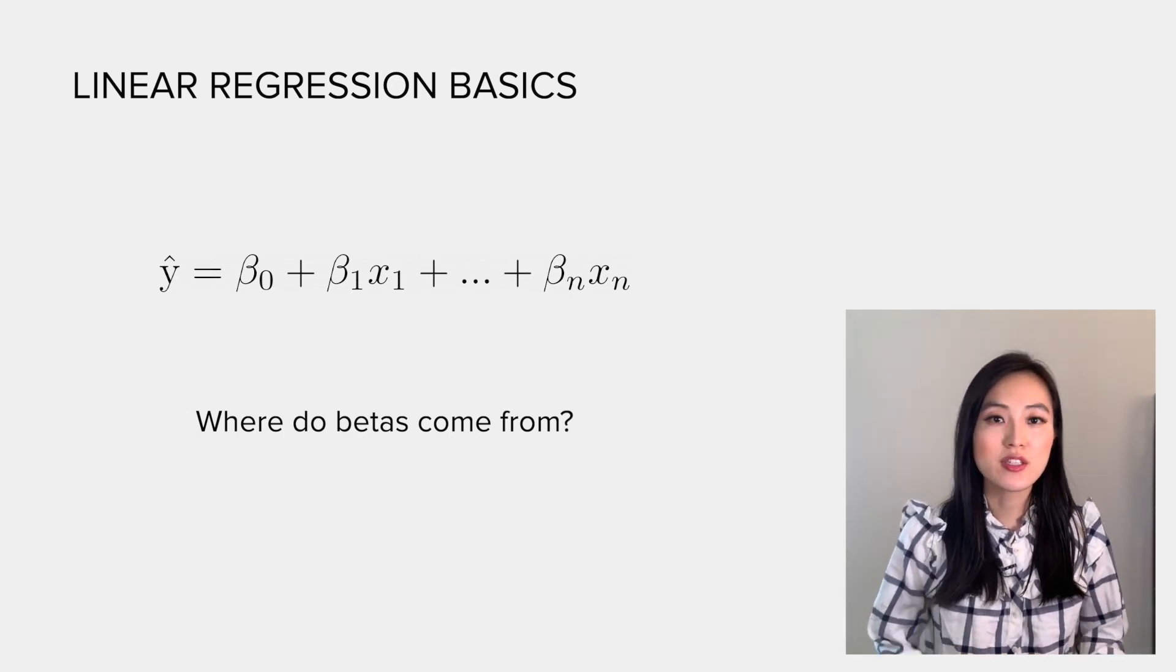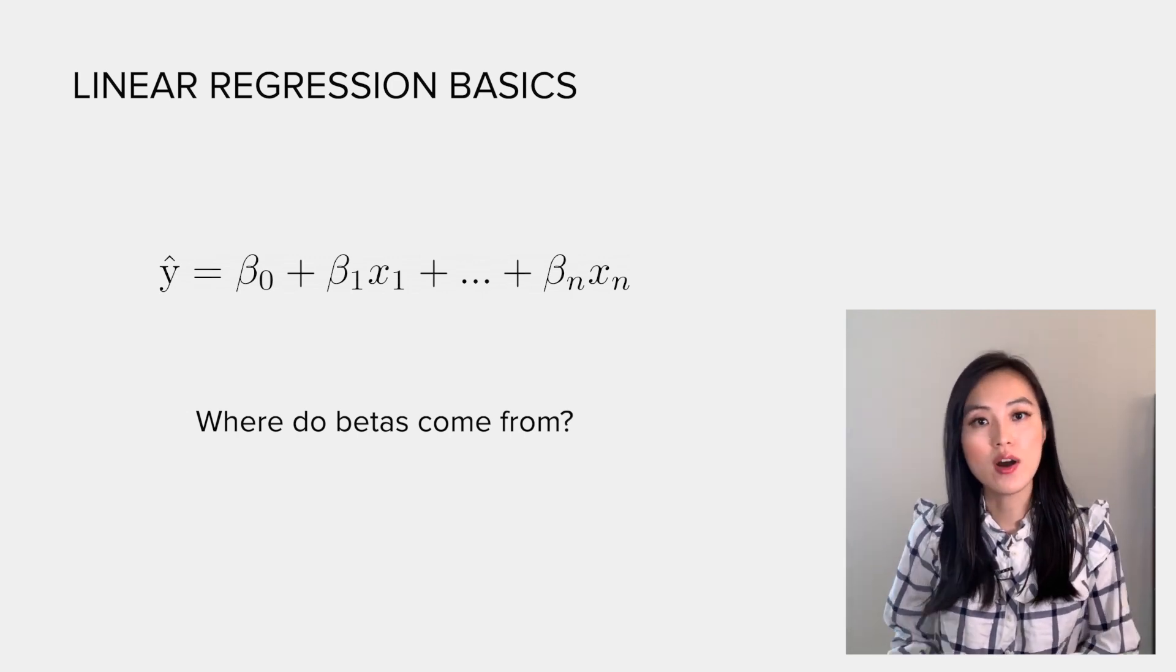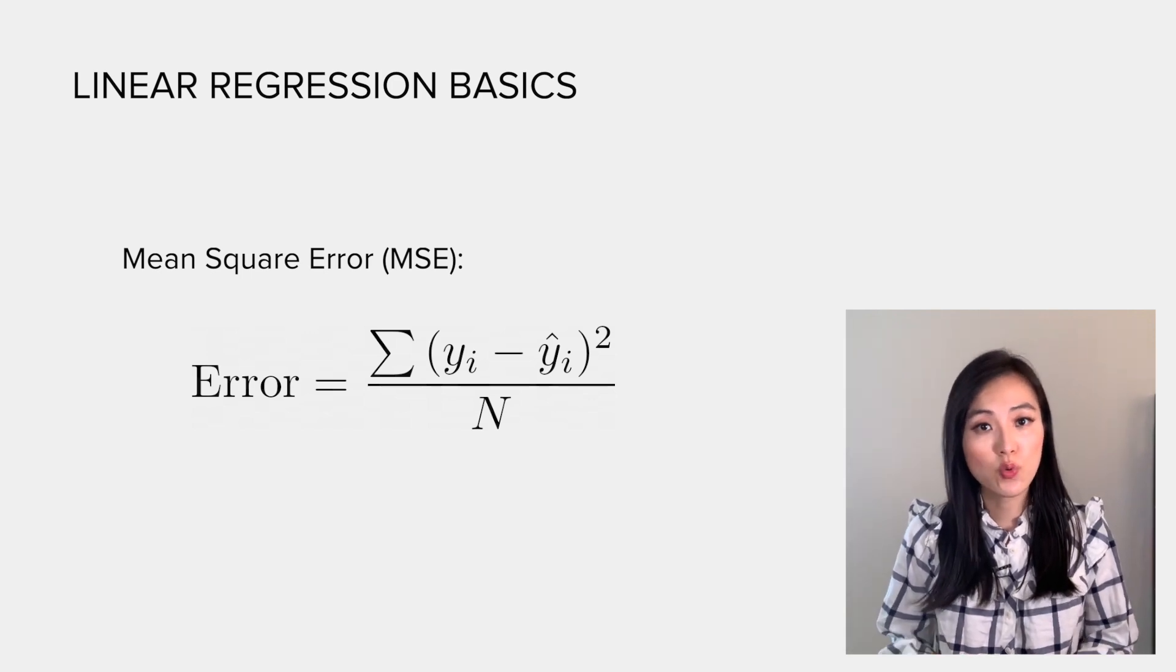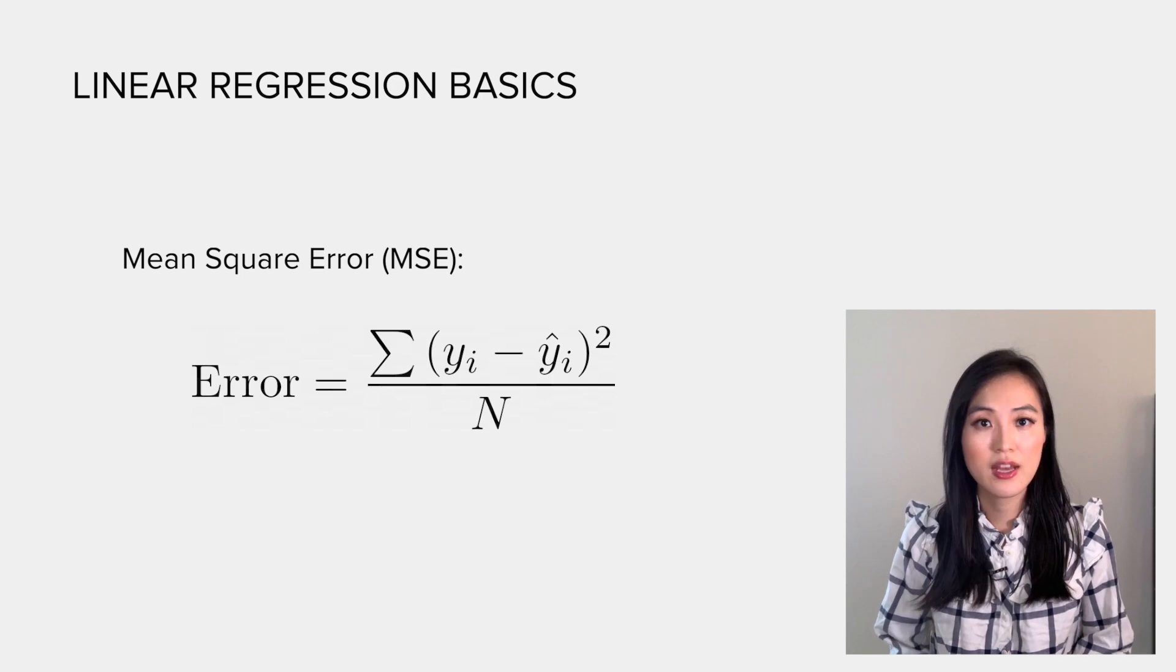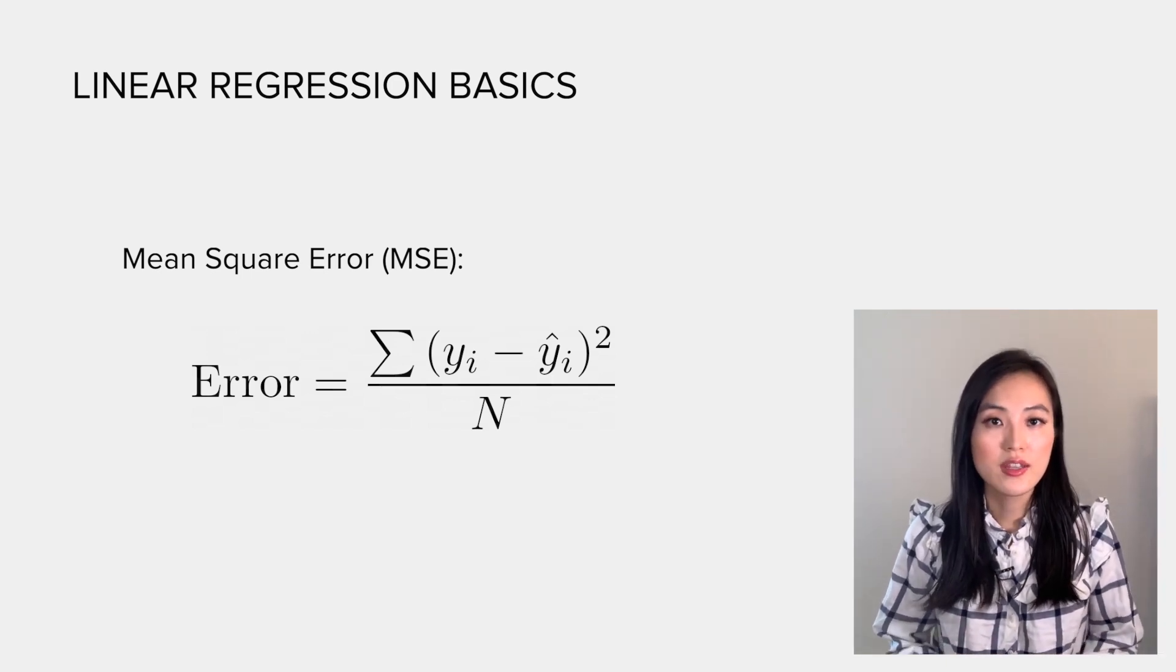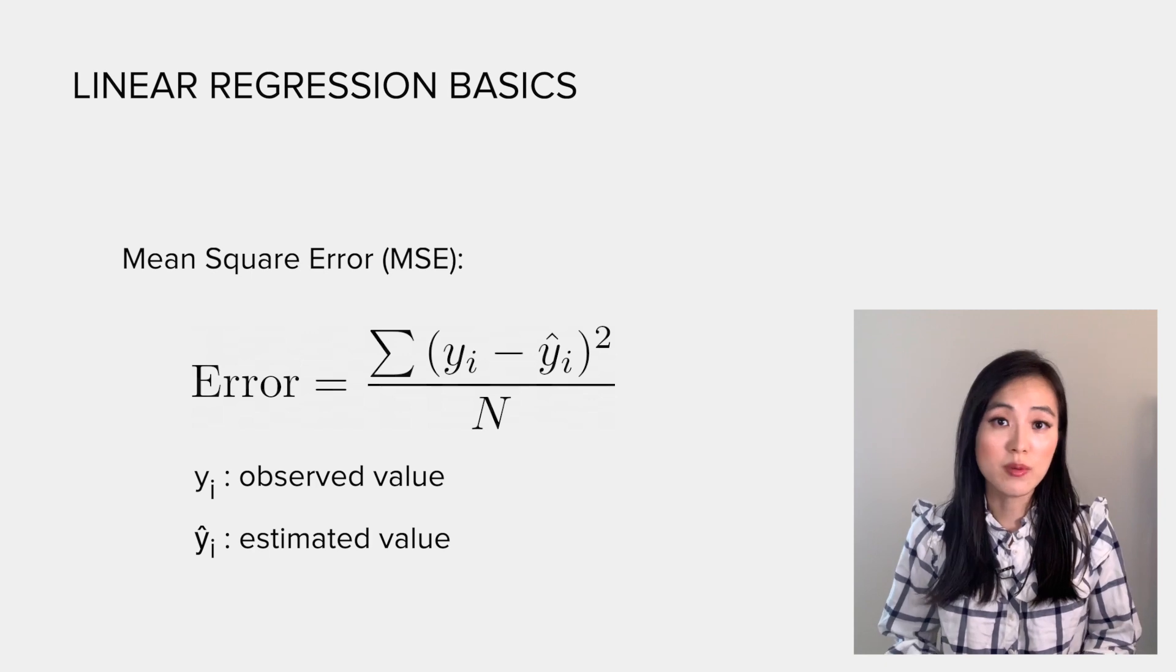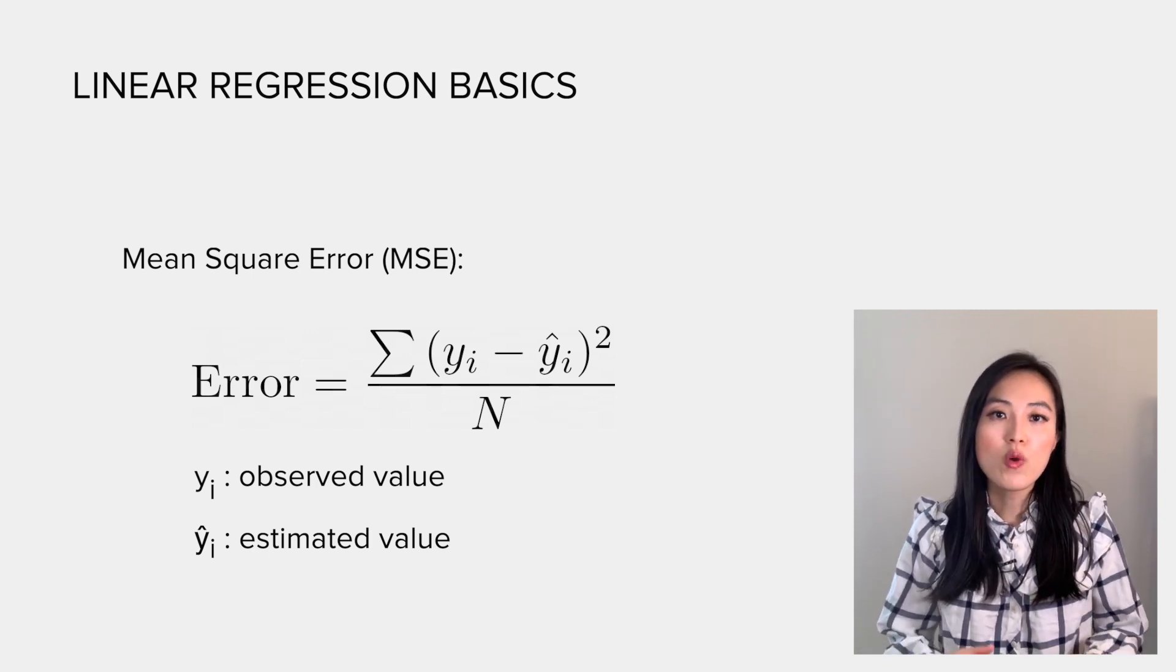That's a great question because it is the core of understanding the exact relationship between x and y. One commonly used method is to calculate the average of the square difference between observed values and predicted values. This error is also called the mean squared error.